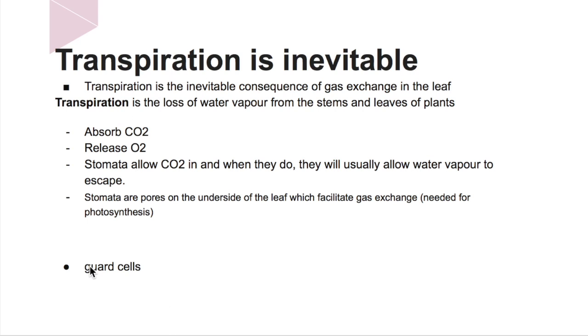Guard cells minimize the water losses. They are the cells that are found in pairs on either side of the stoma, and the stoma is the singular of stomata. Guard cells control the aperture of stoma and can adjust from wide open to fully closed, depending on external factors that affect the transpiration rates.